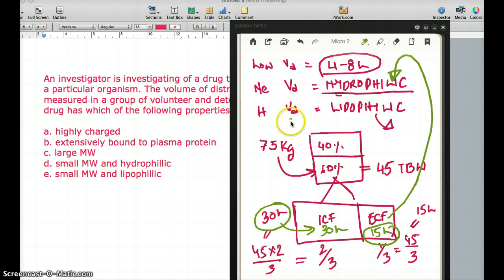Lipophilic? No, that is high VD. I'm ruling out E. Large molecular weight? No. Extensively bound to plasma protein? That would be low VD. Highly charged? I would say choice D is a better option than highly charged because highly charged compounds are usually low VD rather than medium VD. So the answer is D: small molecular weight and hydrophilic.